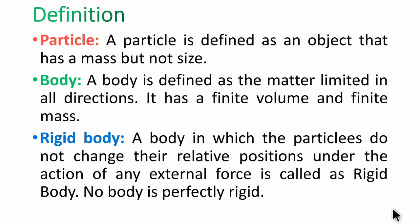Before going to the topics, we must be familiar with some terminologies — specific words used in engineering mechanics to meet exact requirements. A particle is defined as an object that has mass but no size — it has mass but no dimensions. A body is defined as matter limited in all directions, having finite volume and finite mass. A rigid body is one in which the particles do not change their relative positions under the action of any external force. No body is perfectly rigid.